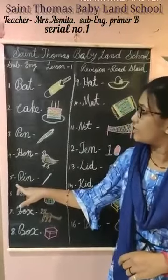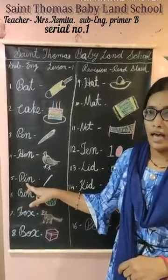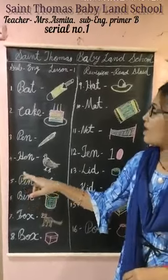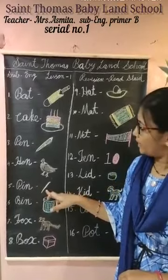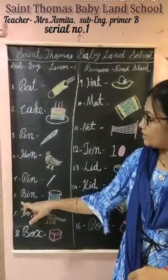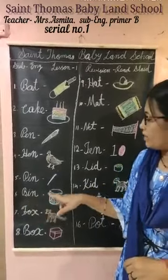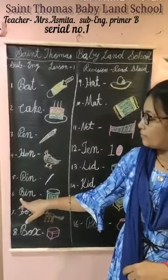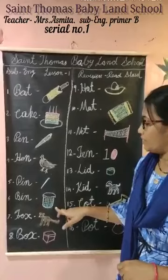Next is P, I, N — pin. P, I, N — pin. Next one is bin. B, I, N — bin. Read together: B, I, N — bin.